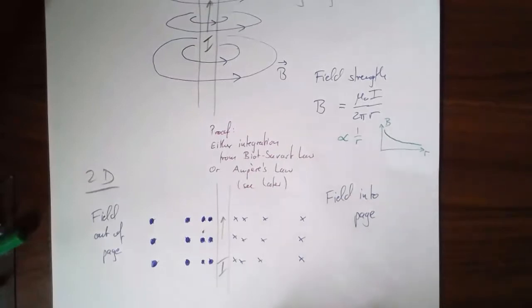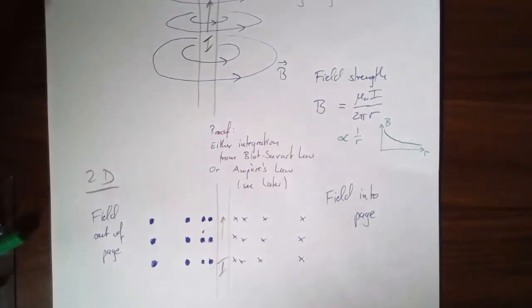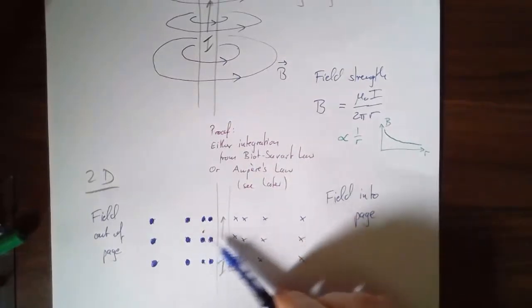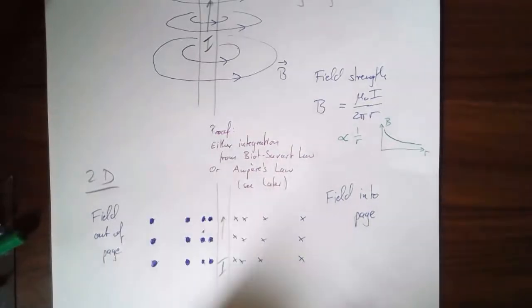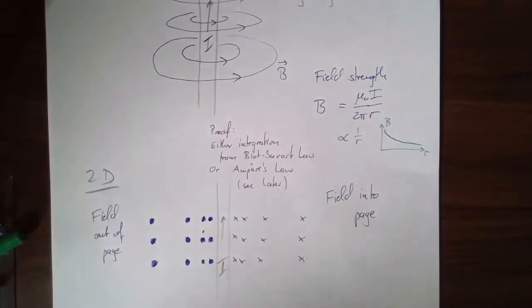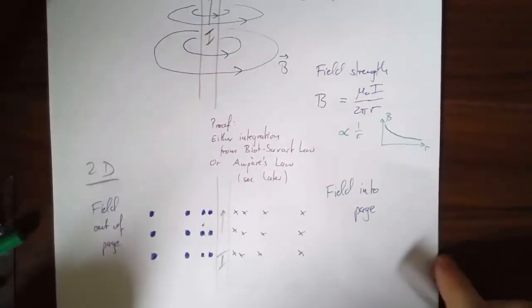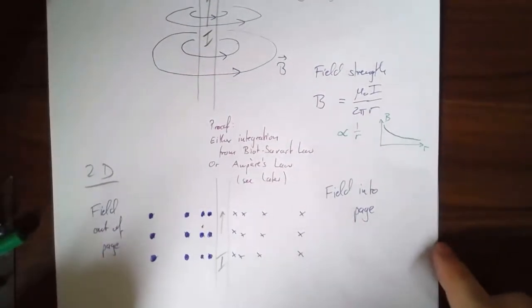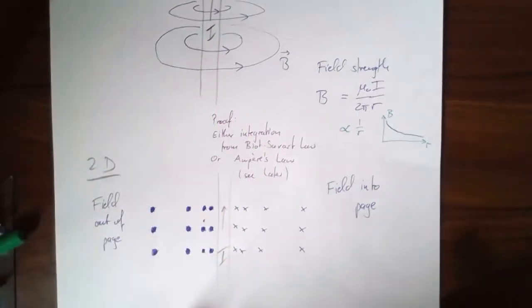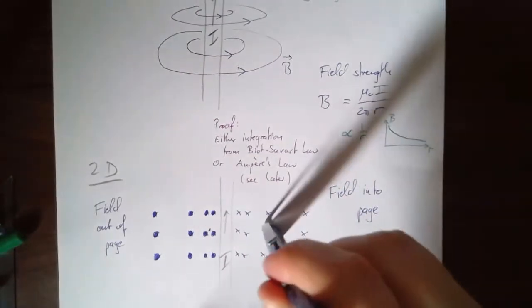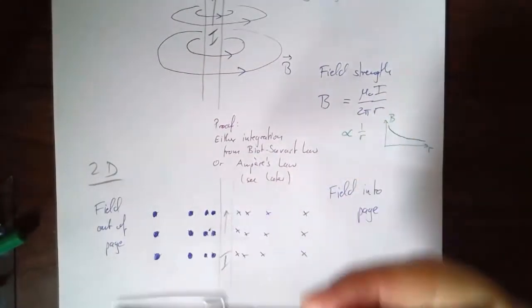I always have trouble remembering which is which — every time I come back to magnetism I can't remember. One time one of my students gave me this rather genius idea: just pretend it's an arrow. You're shooting an arrow from a bow — do you see the point coming towards you, or do you see the crossed tail feathers? That might work for you; it's worked for me surprisingly well. So: crosses into the page, dots coming out of the page.